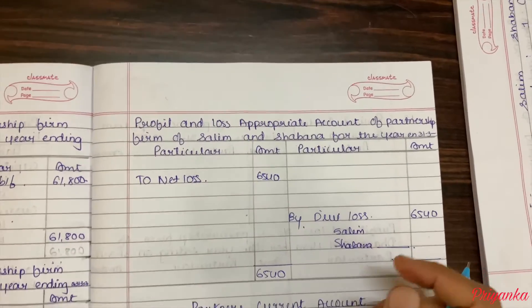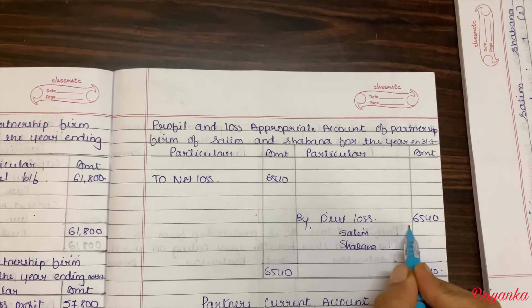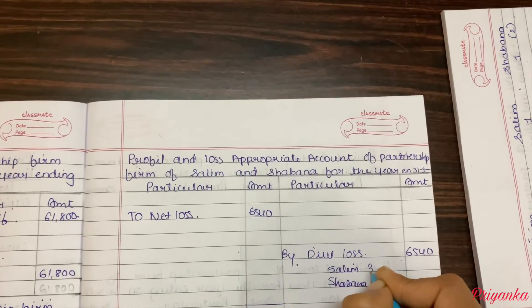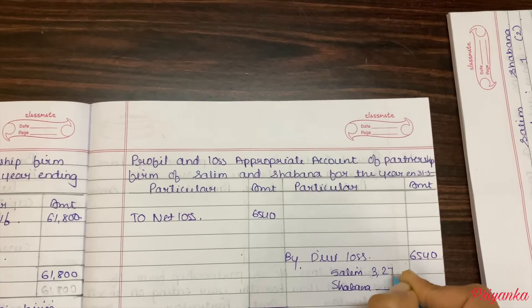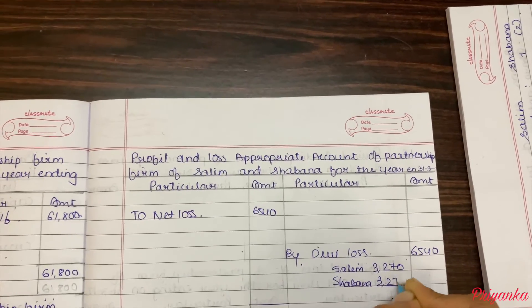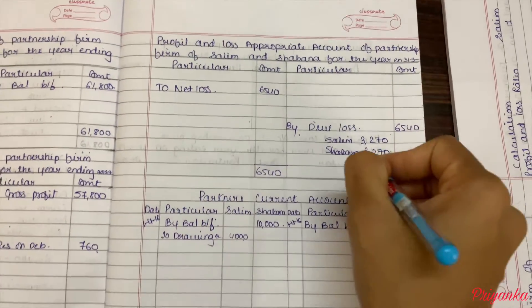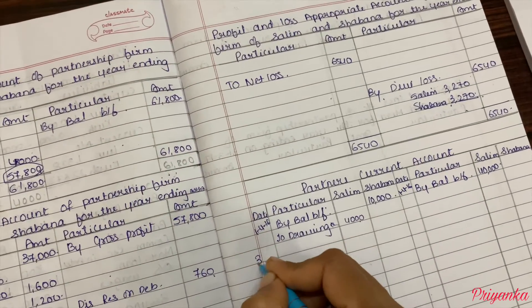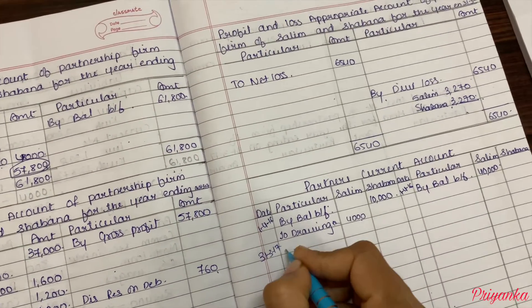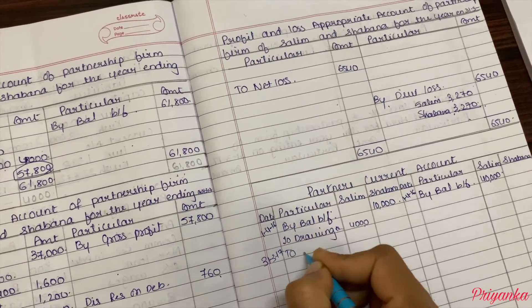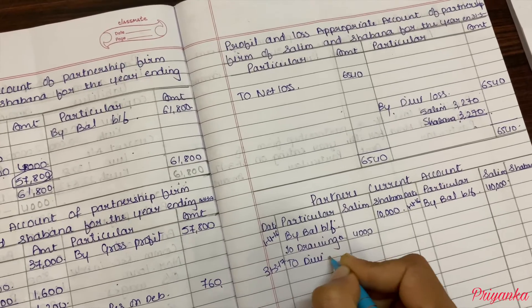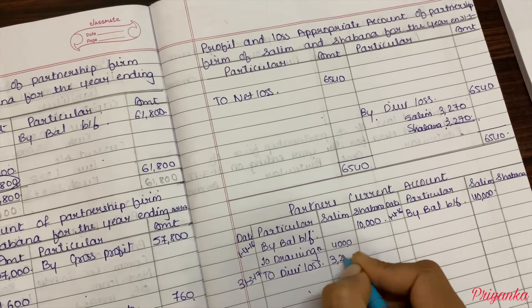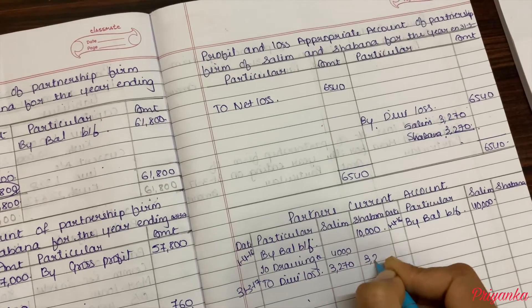As we can see, the profit and loss appropriation account is totally empty. So take the total at both sides: 6,540. Obviously the divisible loss — because we find the difference on your credit side — will carry forward the same amount as no other amount is to be deducted. So this divisible loss is going to be distributed between Salim and Shabana in their P&L ratio. As the question doesn't give a ratio, we assume equal proportion. So they will each get 3,270.